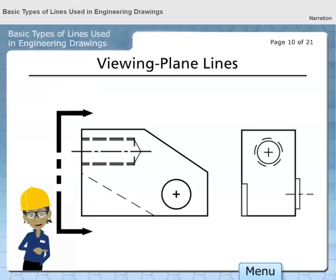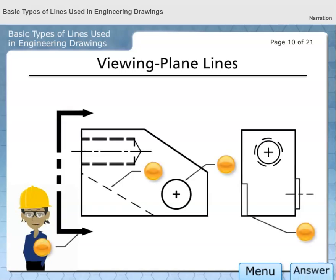Viewing plane lines represent the direction of sight used to view a particular feature. These lines may be a series of long dashes or two short dashes between a pair of long dashes. Which one of these lines best represents a viewing plane line?